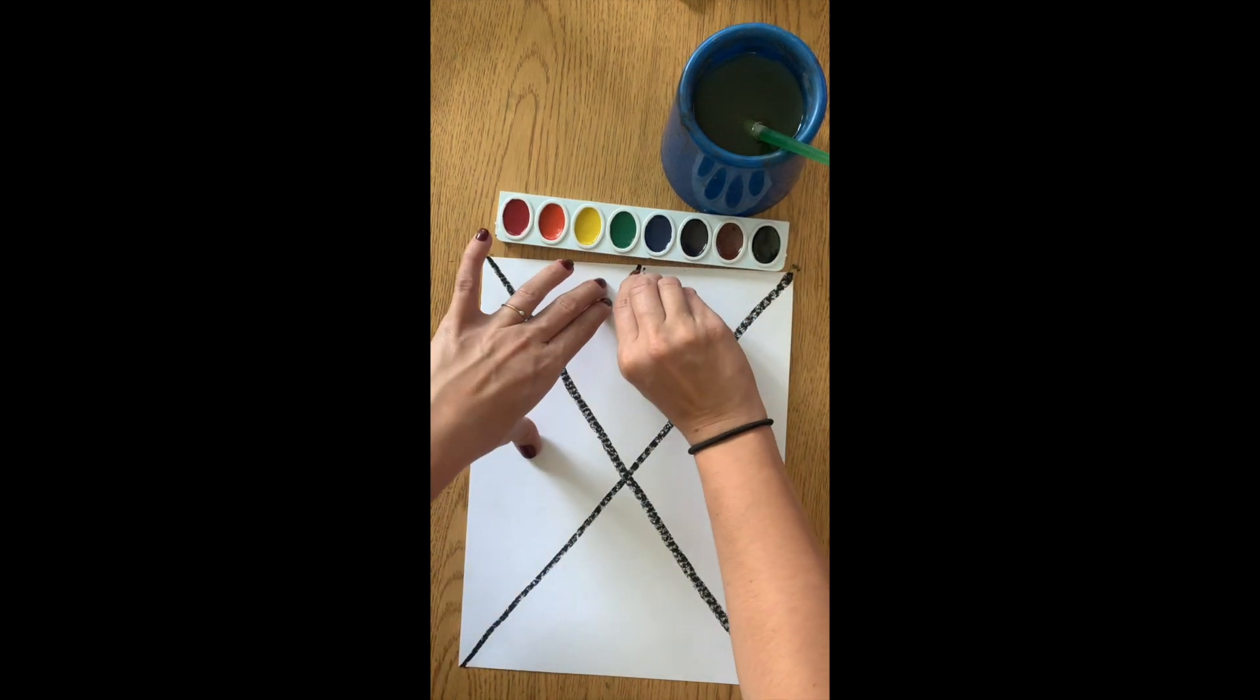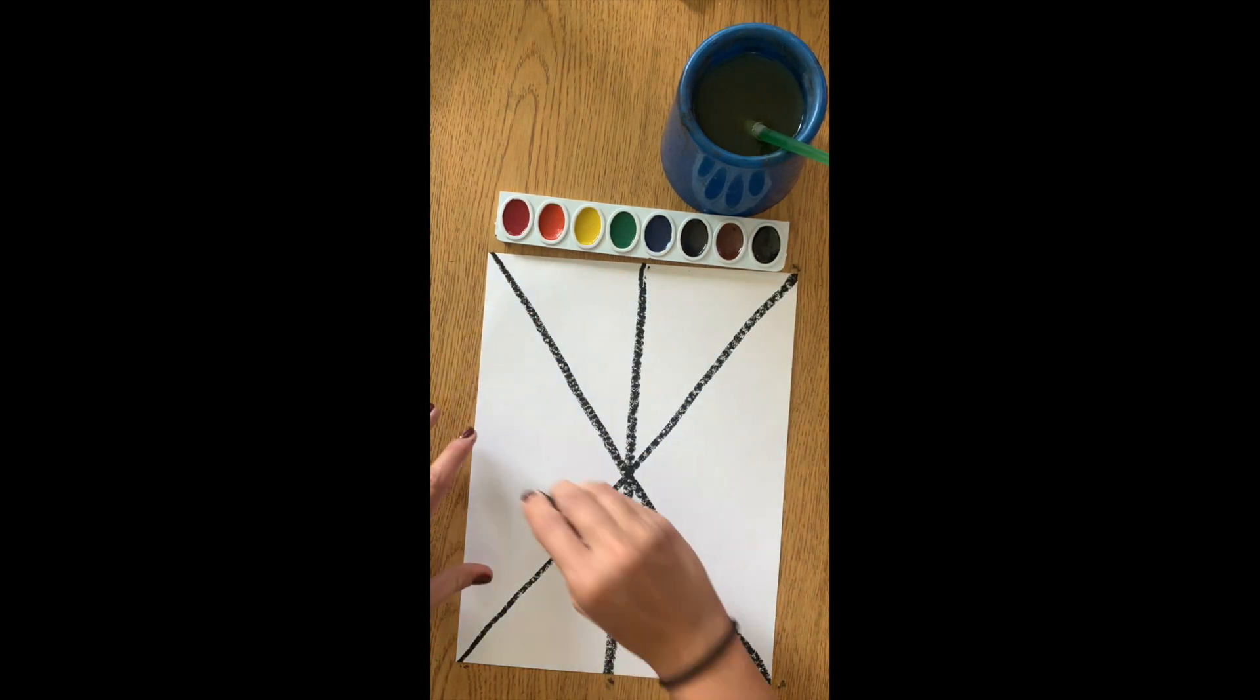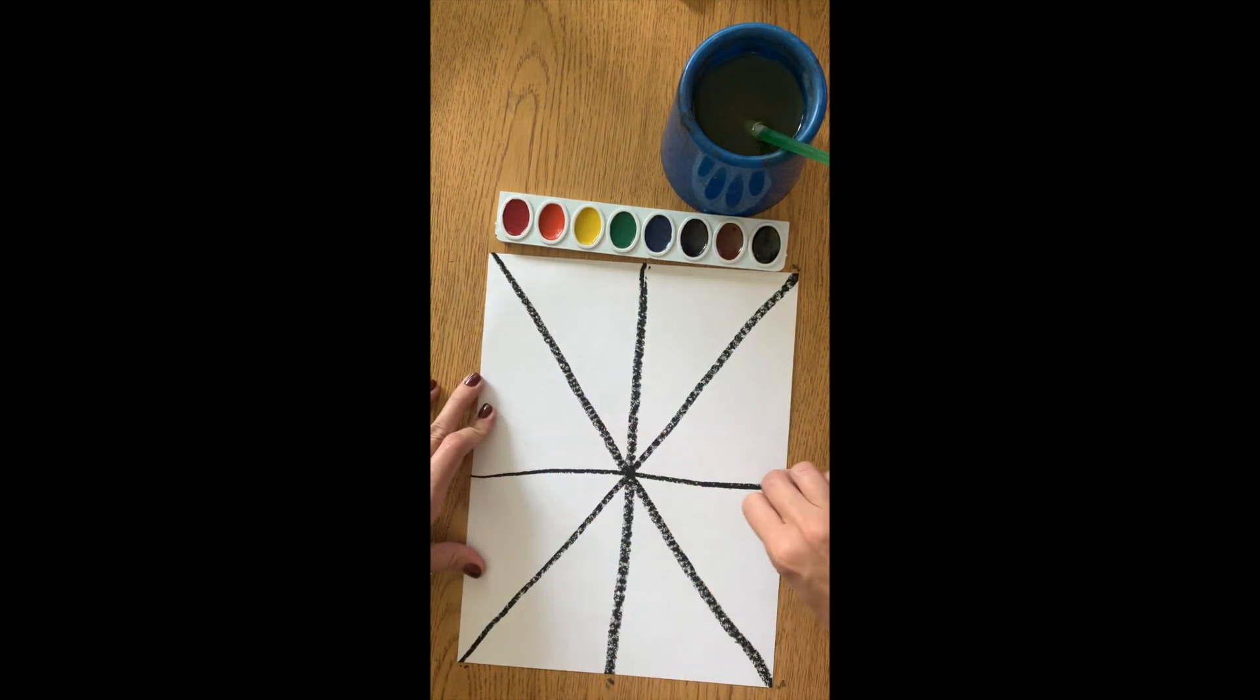Next, we will create a vertical line from the top to the bottom, and then a horizontal line from the side going through the X.